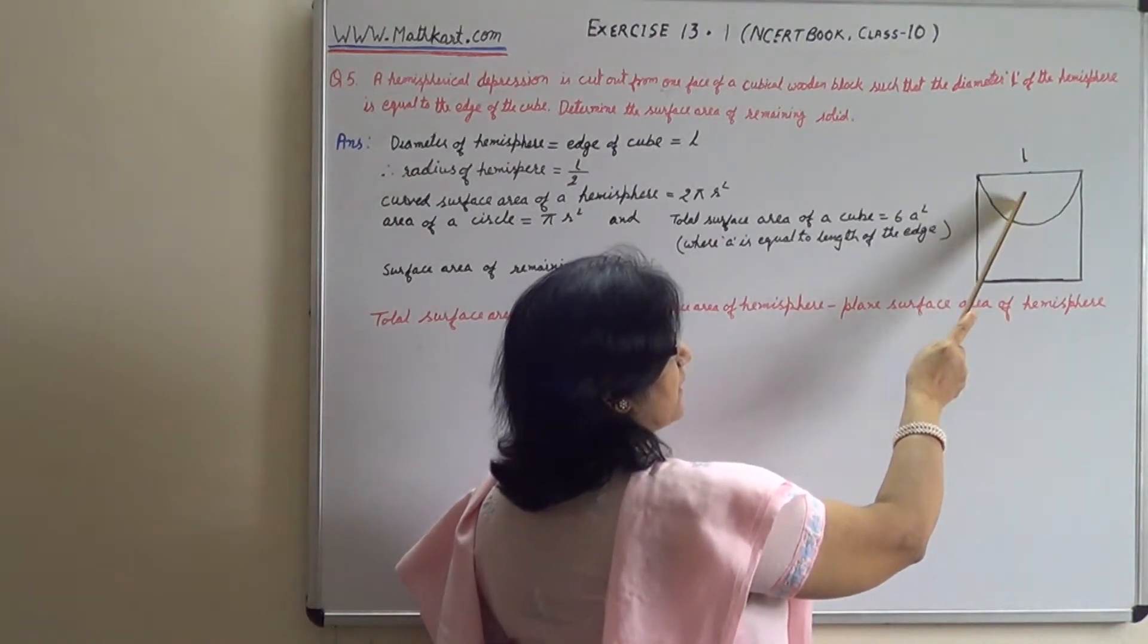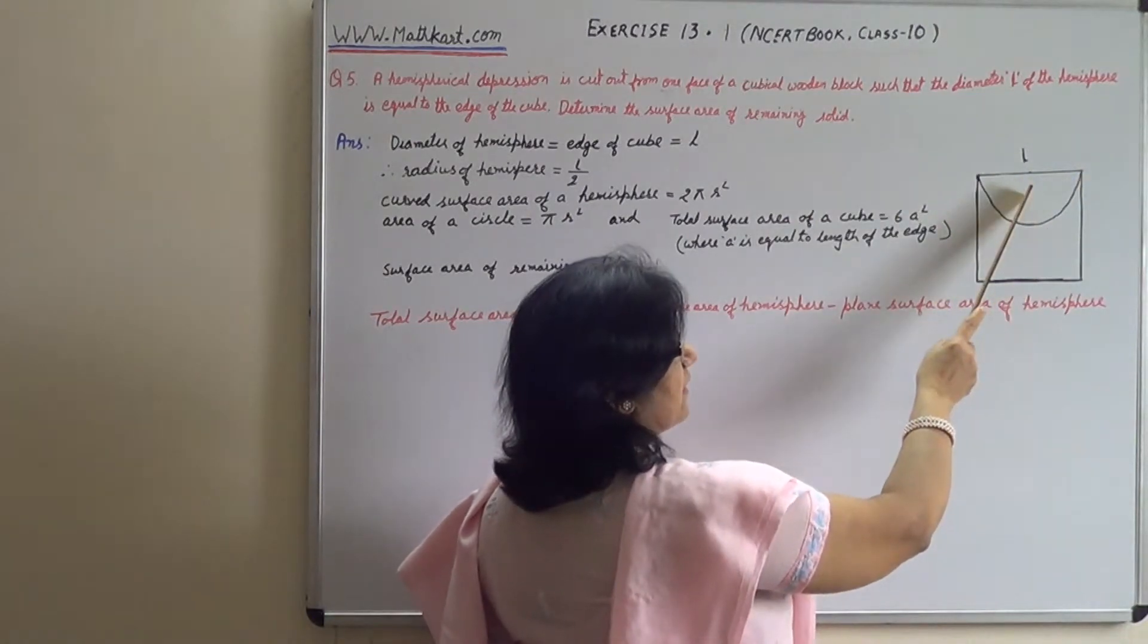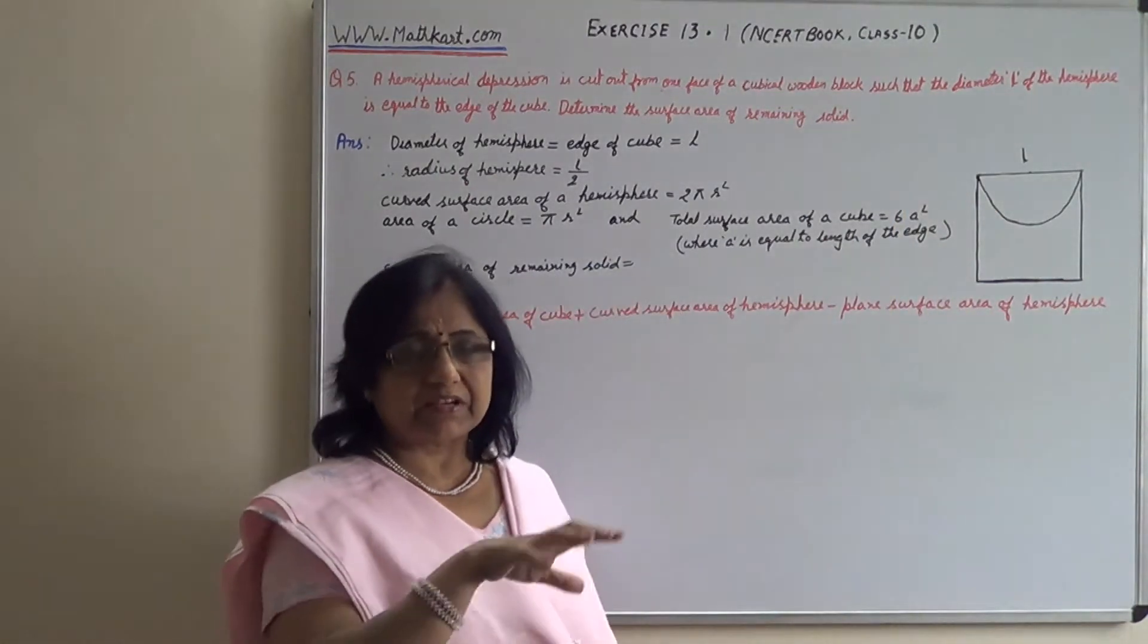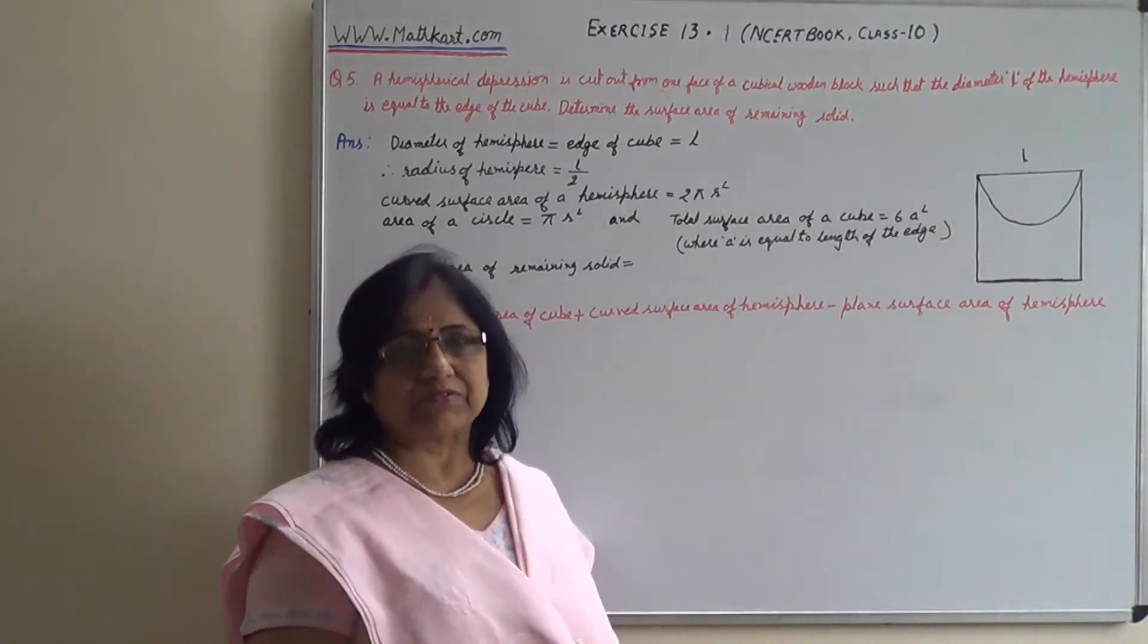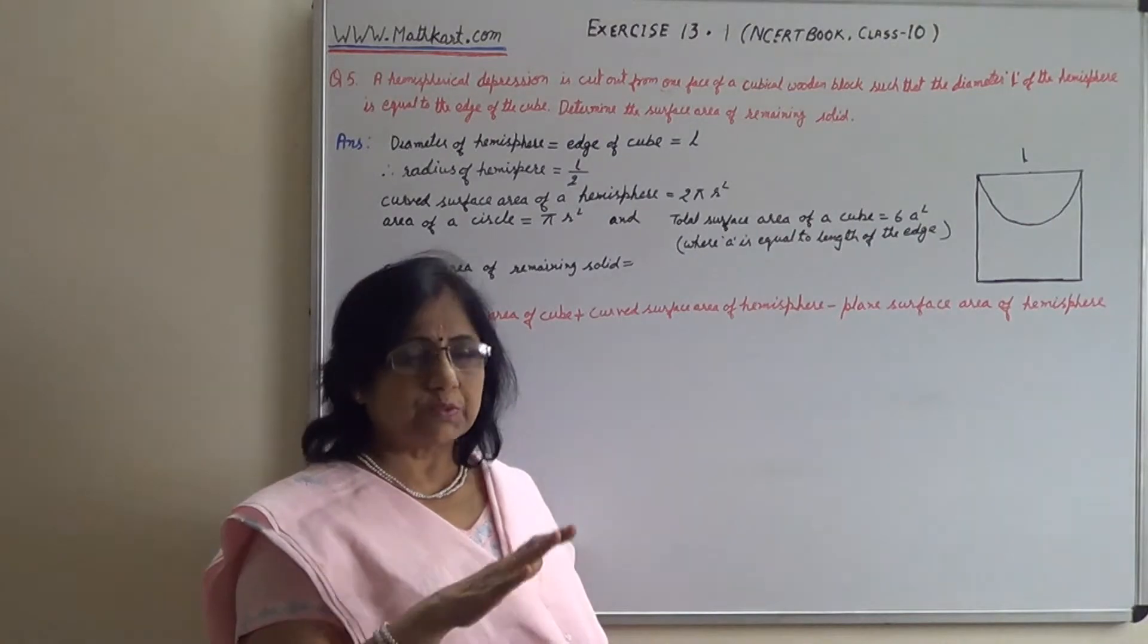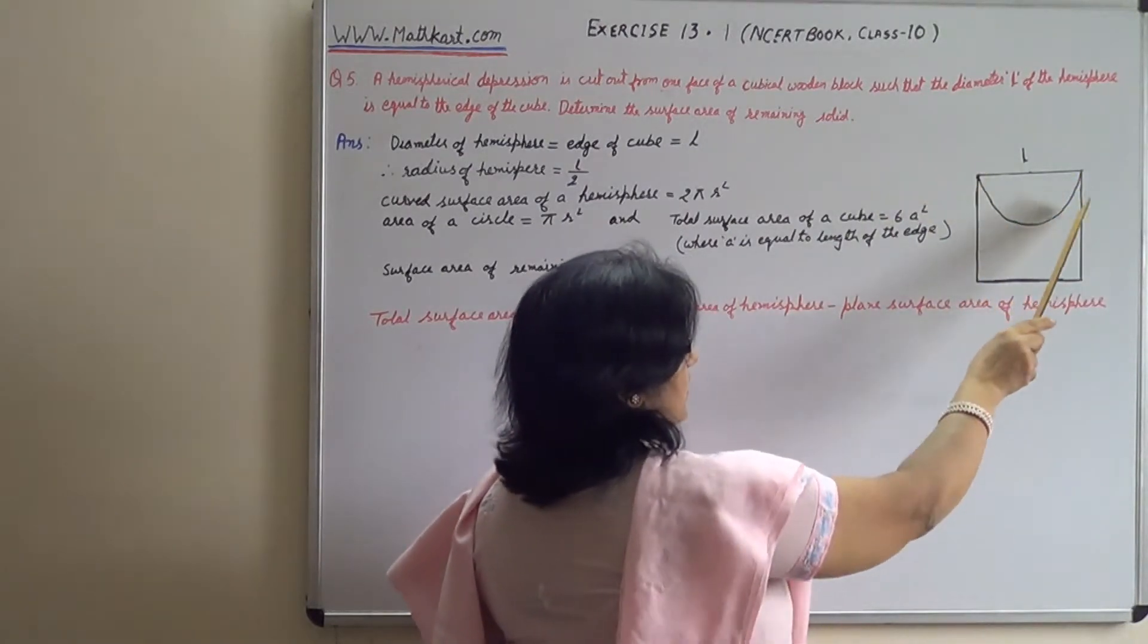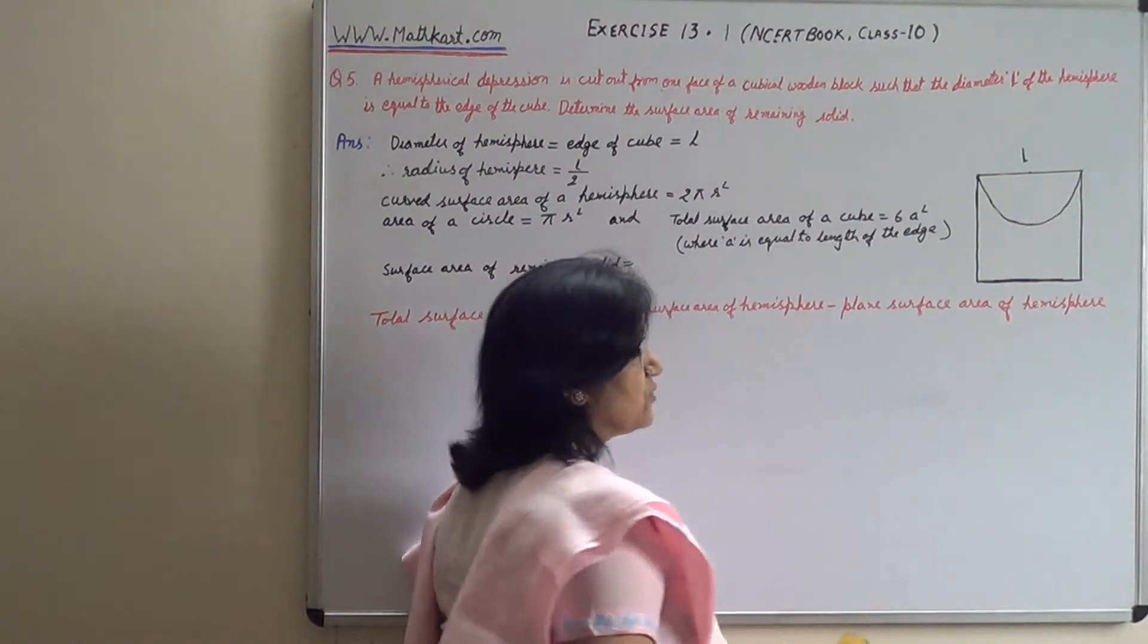It is scooped out and is removed. So when we remove a hemispherical shape, the cube has become a circle which is a plane surface area of hemisphere. The surface area of the hemisphere plus the surface area of the remaining solid.